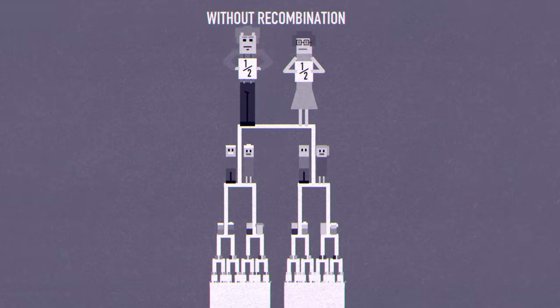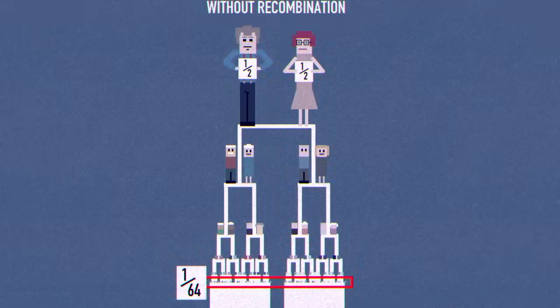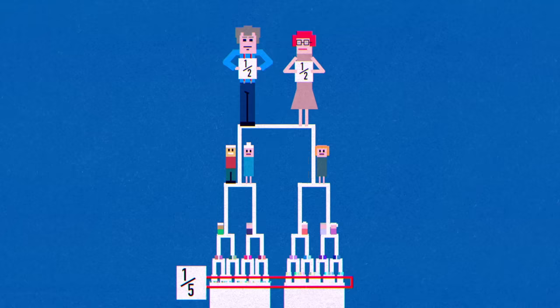For example, without recombination, just 1/64th of your DNA would come from each ancestor six generations back. Because of recombination, that number can be higher, though we don't know for sure how high. Or it can be as low as zero.